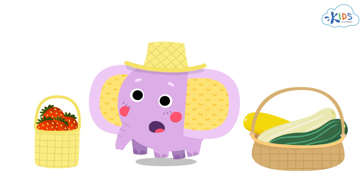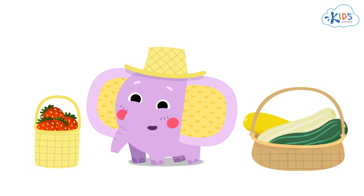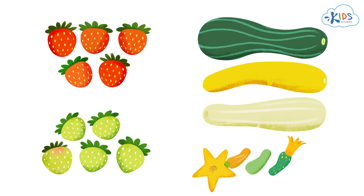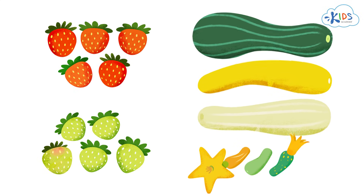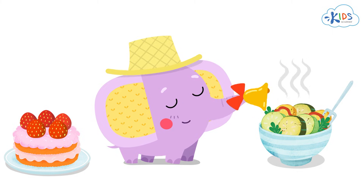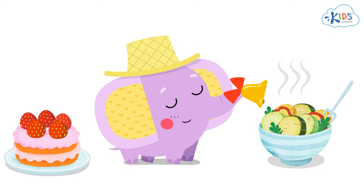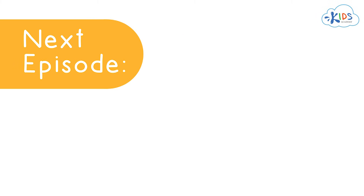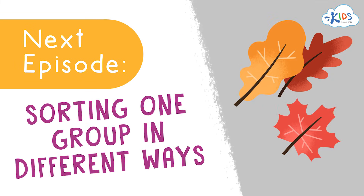We'll make a great dinner from them. And we could do it because we know how to sort objects by color and size. Next time, we'll talk about sorting the same group of objects different ways.